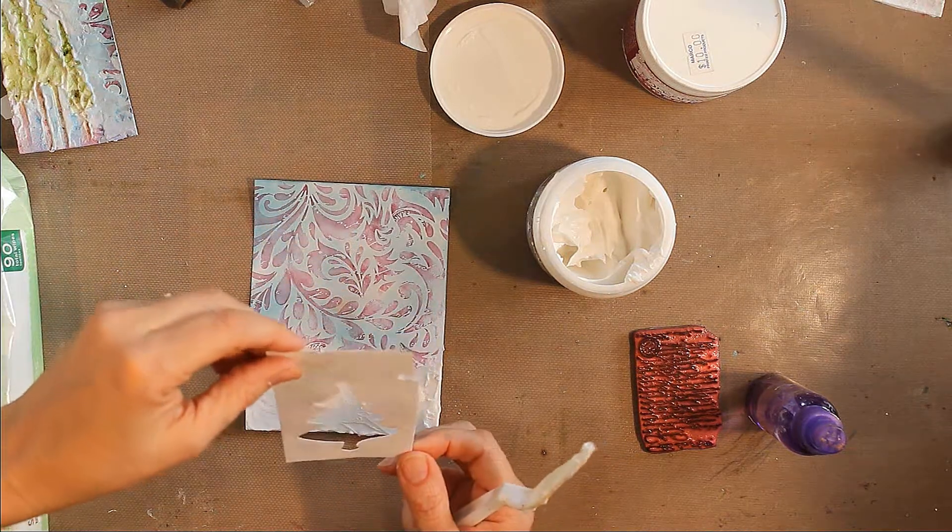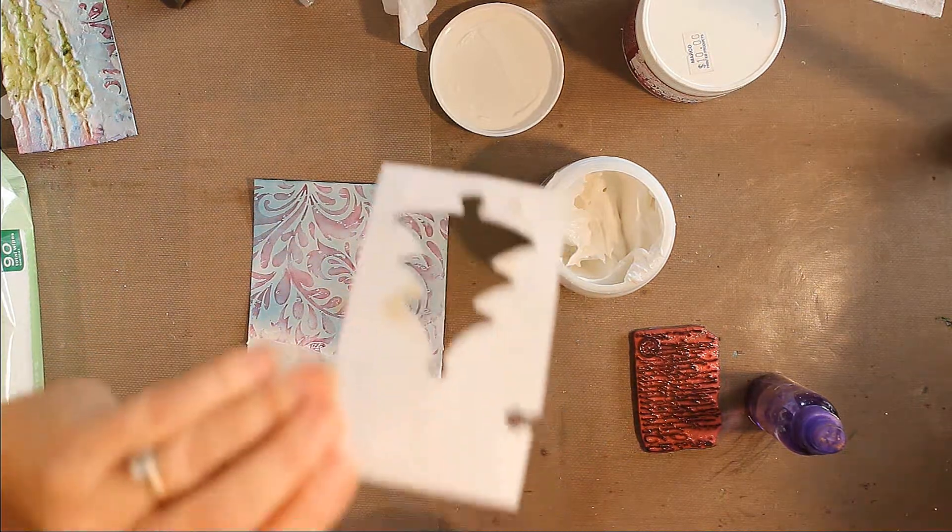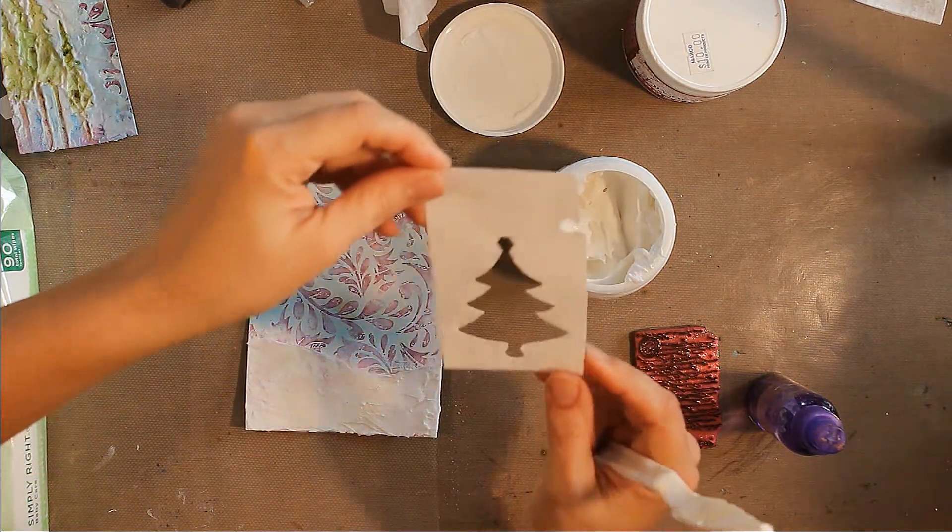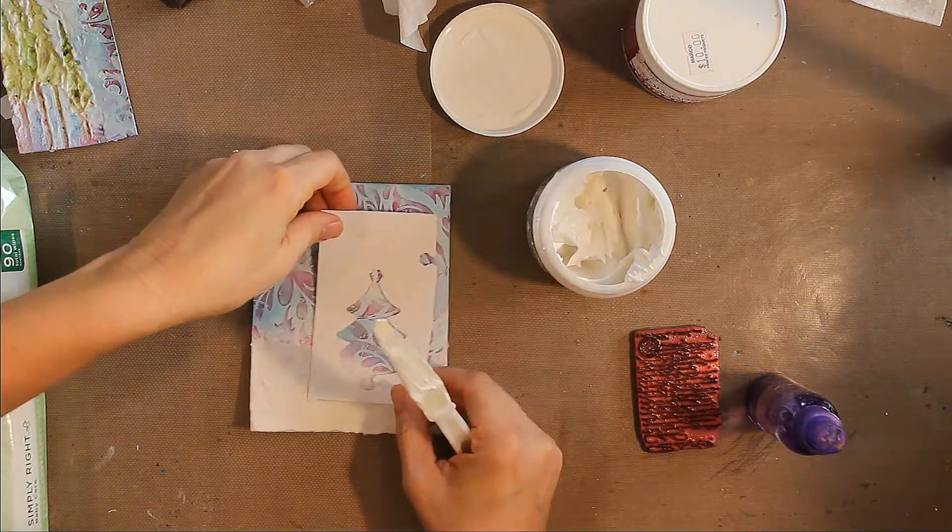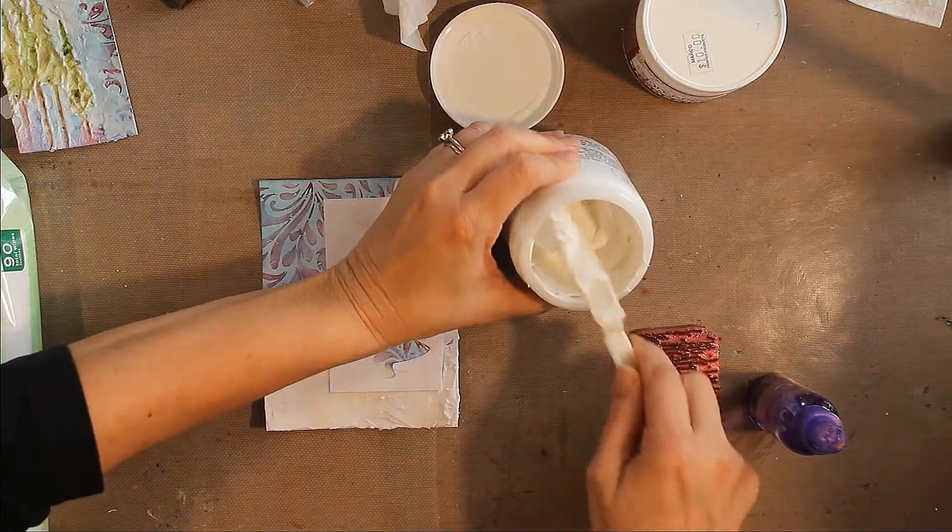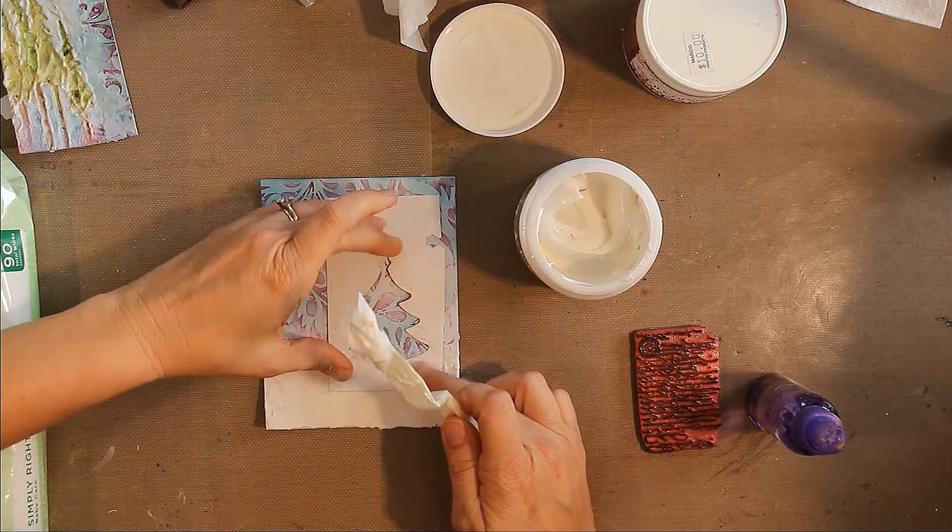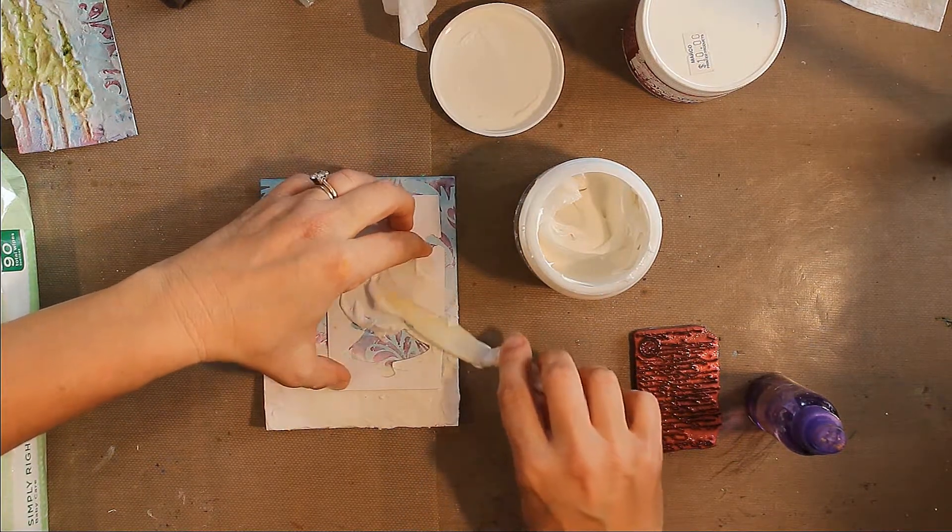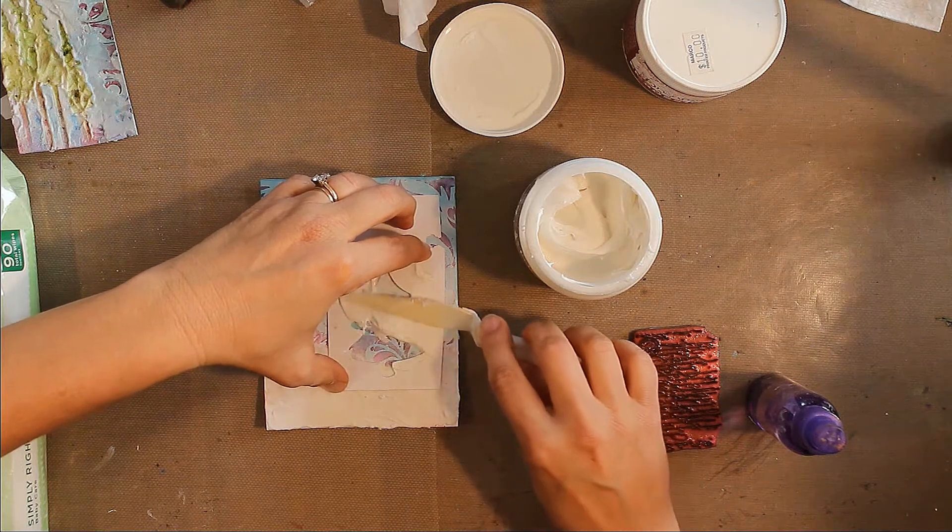I am going to have created my own little stencil here. It's just a Christmas tree that I cut out with a die and I'm going to use that for my stencil today. I'm going to take my embossing paste on my palette knife and rub it over the stencil.